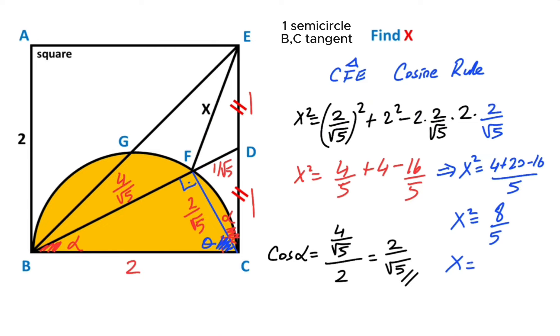Let's square root both sides of the equation. So x = 2√2/√5. That means x is going to be 2√10/5.